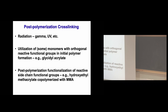Post-polymerization crosslinking includes gamma radiation and UV radiation, which are most common. As you hear about controlled radical polymerizations later this week, you'll see other routes to forming crosslink structures that provide more control. Two different types: one is to co-polymerize with something that has two orthogonal reactions, giving you more structural control over the network.